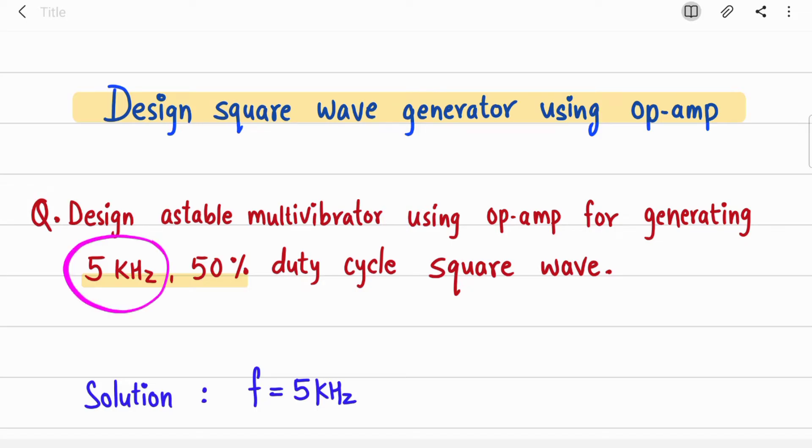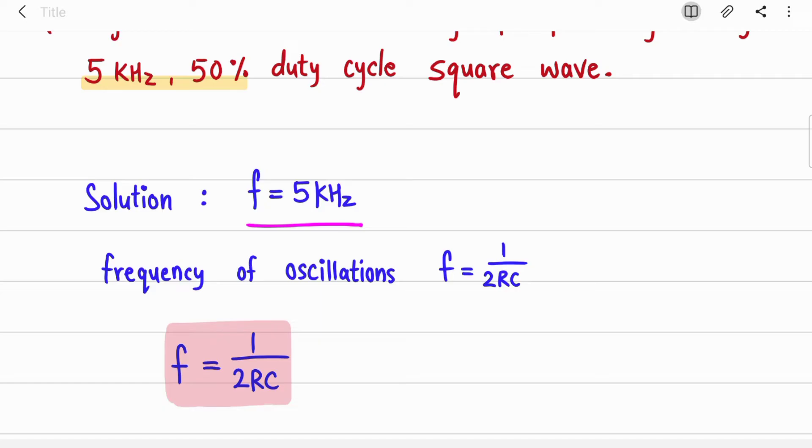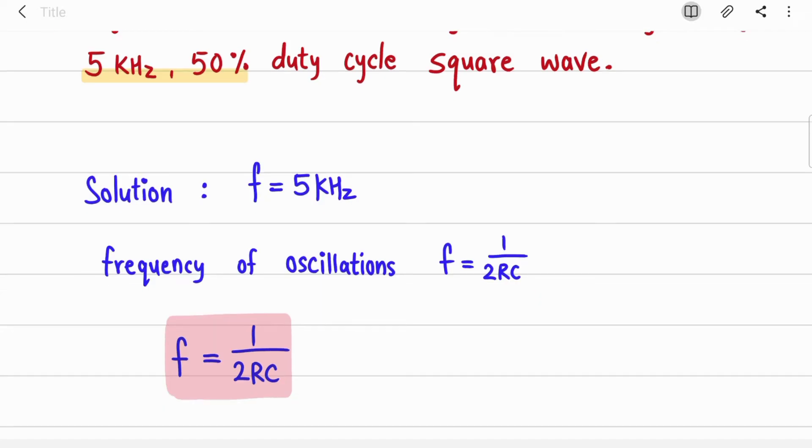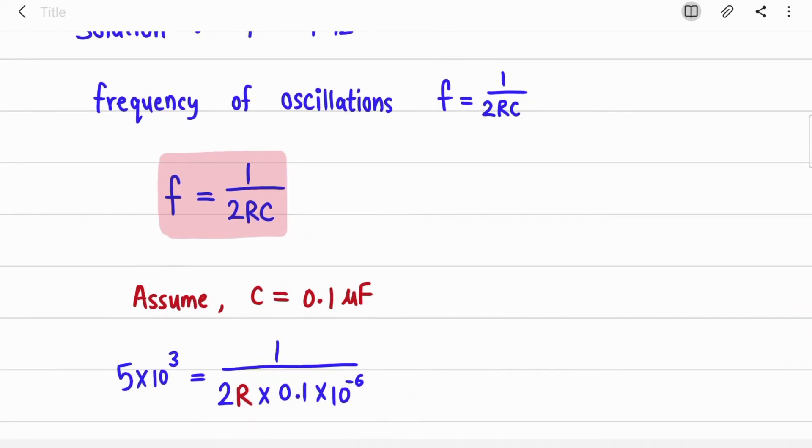In this question you have given 5 kHz and frequency of oscillation is f = 1/(2RC). So here what will you do? You know the frequency, you will assume the value of capacitor.